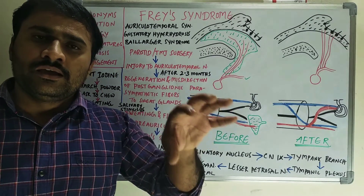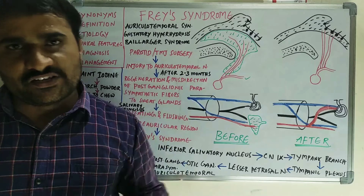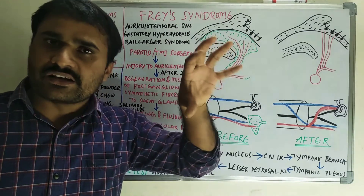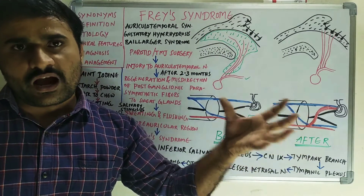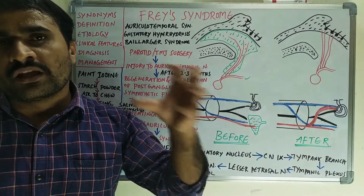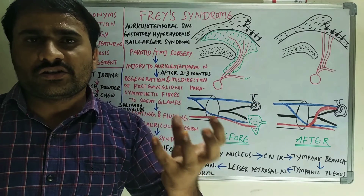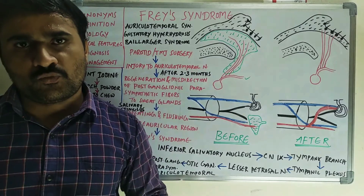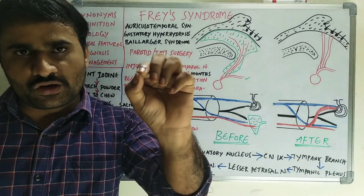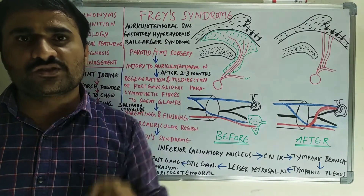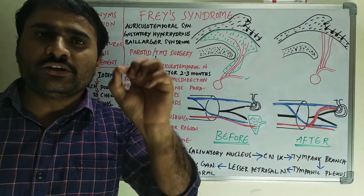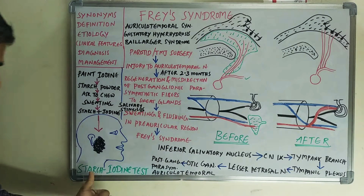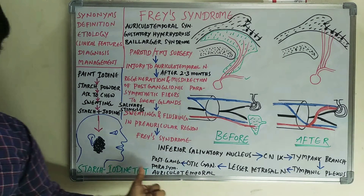Diagnosis is mostly based on clinical history. The patient gives a history of parotidectomy or TMJ surgery previously and now has sweating in the preauricular region on mastication. That history is the first important point in diagnosis. Then you can do the Minor's starch-iodine test, which is very important.